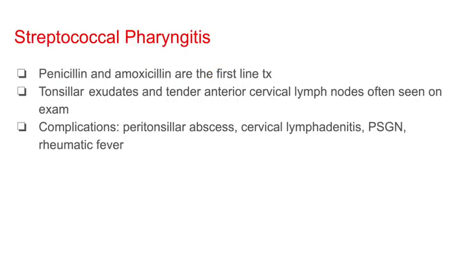For streptococcal pharyngitis, penicillin and amoxicillin are the first-line treatments. Patients typically present with tonsillar exudates and tender anterior cervical lymph nodes on physical exam. Complications of strep pharyngitis include peritonsillar abscess, cervical lymphadenitis, post-streptococcal glomerulonephritis, and rheumatic fever.